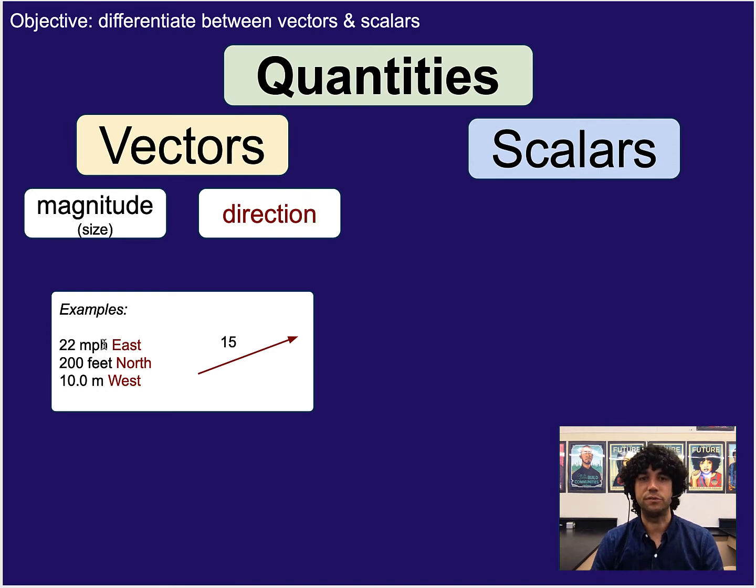So some examples that we've already talked about are like velocity, so 22 miles per hour east, or a displacement like 200 feet north, or 10 meters west. Or sometimes you can even show it without saying the direction in a word, you can just show the direction with an arrow. Hence the description of an arrow often being called a vector, where the length of the arrow, like literally the actual how long it is, tells you the magnitude. Sometimes we also write that magnitude in the number form right next to it, and the direction it's pointing represents the direction.